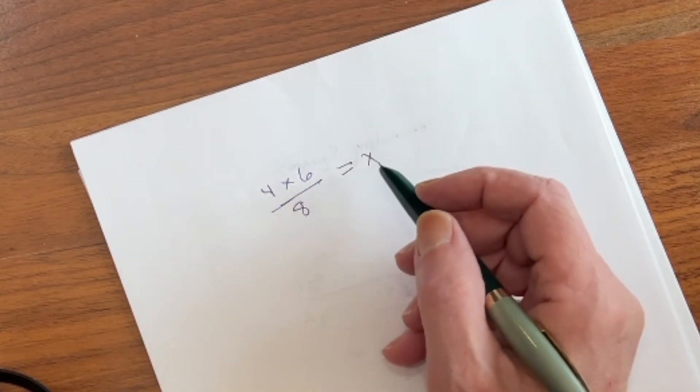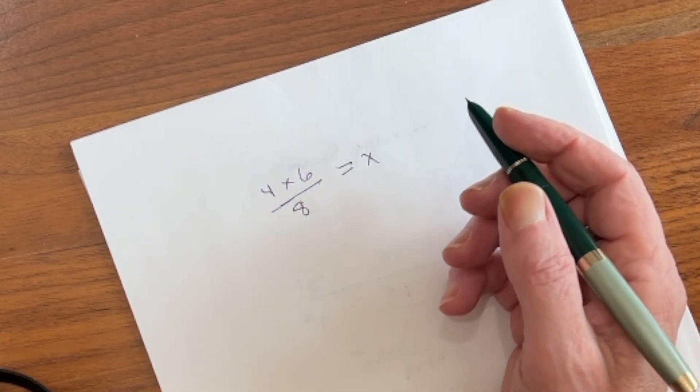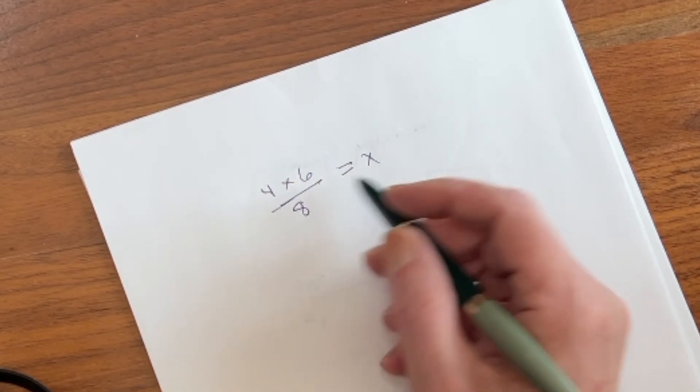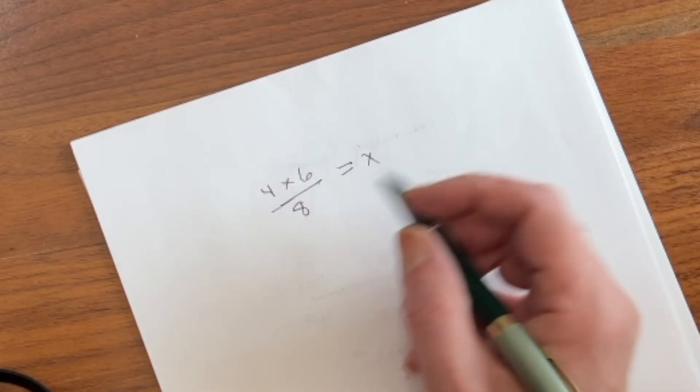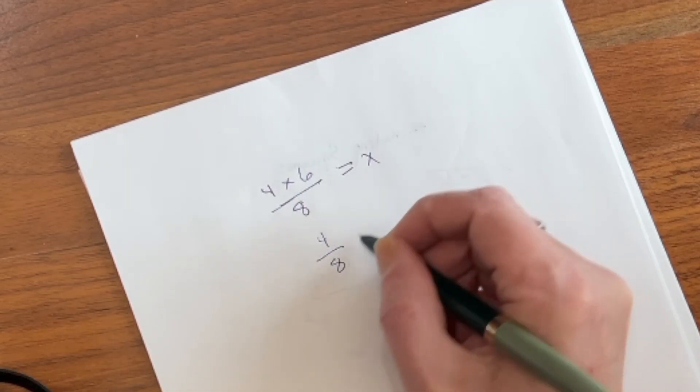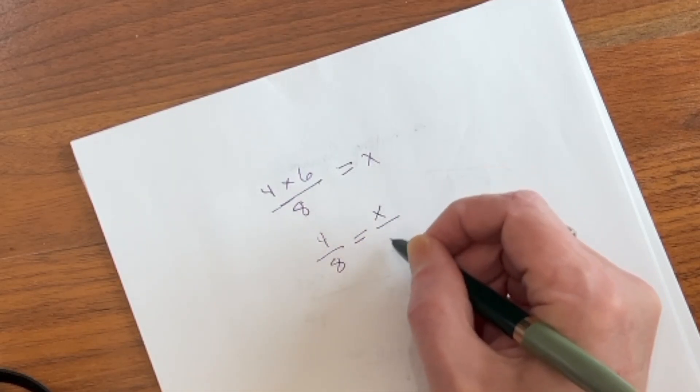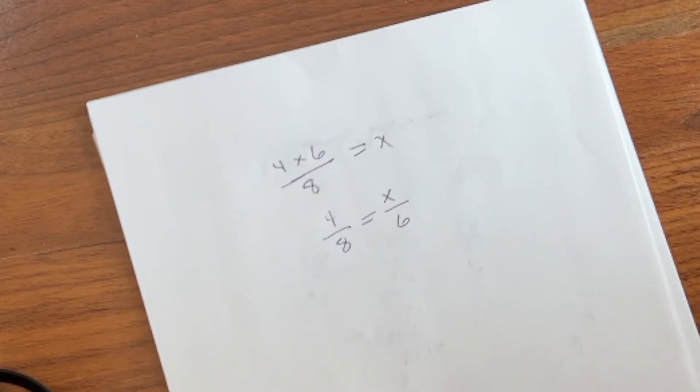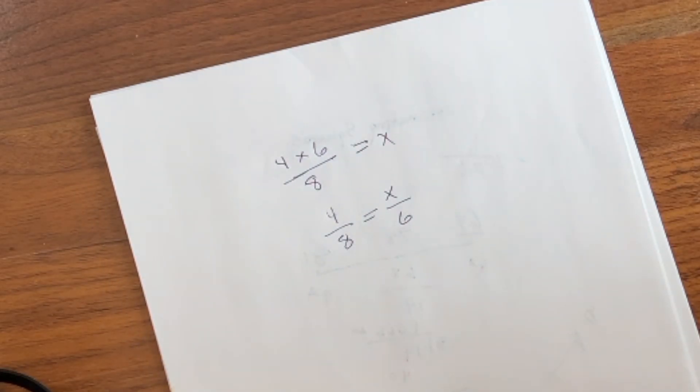Now, we can actually divide both sides by a number. And as long as we divide both sides by the same number, it's still an equivalent equation. So, we can have 4 over 8 equals x over 6. We simply divide both sides by 6. Let's see how we look at that on the slide rule.